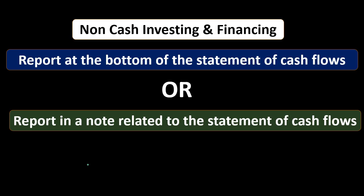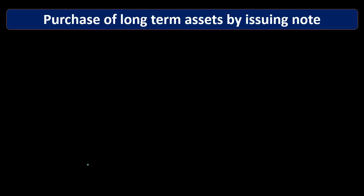That goes back to the question of why these non-cash things would be linked to the Statement of Cash Flows. Why don't we just put them in a different note? Why are they somehow tied to the Statement of Cash Flows? To give an example of why that makes sense, let's take a look at one of these items. We're going to purchase a long-term asset by issuing a note, and think about the journal entry related to that.